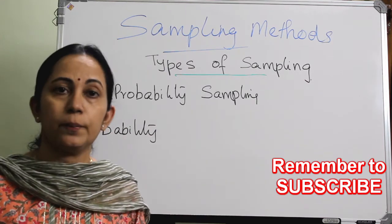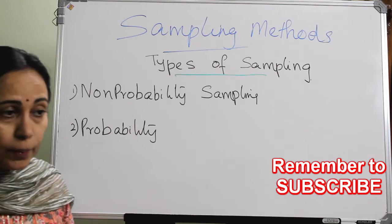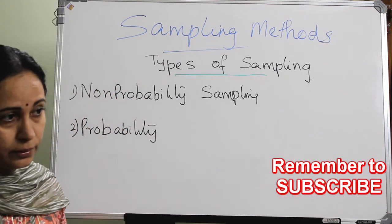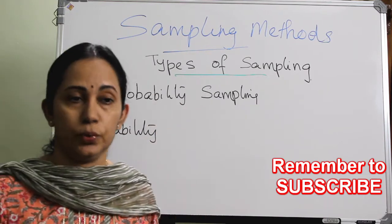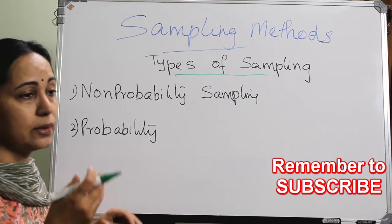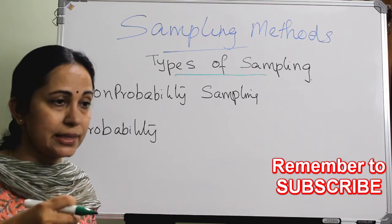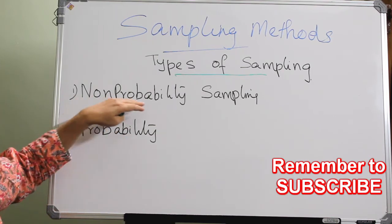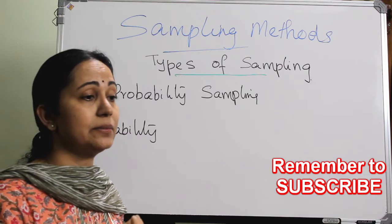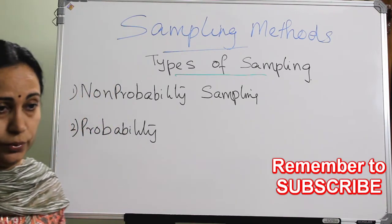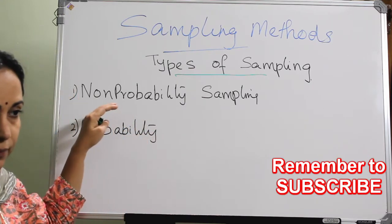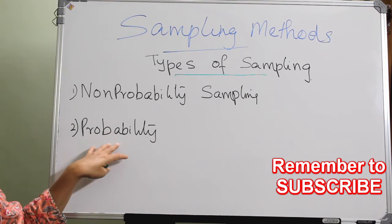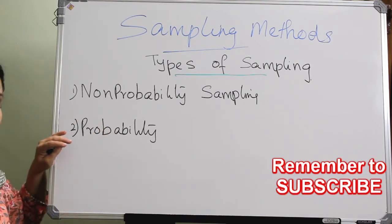In non-probability sampling, the probability of each sample getting selected into the study is not known. But in probability sampling, we know the probability of each person or item getting selected into the study. In non-probability sampling, the probability of each unit getting selected is not known. Definitely, probability sampling is the better one, so that errors and bias can be reduced or eliminated to a greater extent.